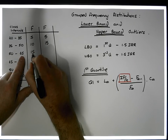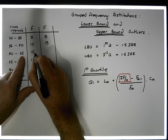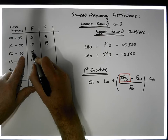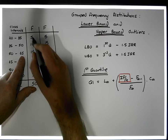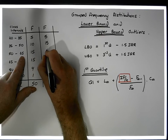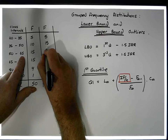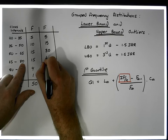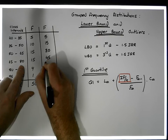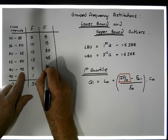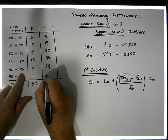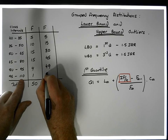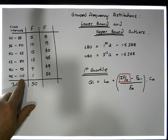How many are less than 65? Well, there's the 15, the 10, and the 5, so that gives us a total of 30. And then we have 45, we have 49, and we have all of the observations less than 110.